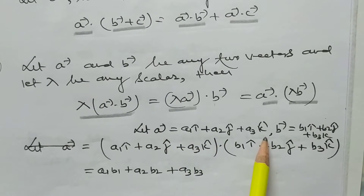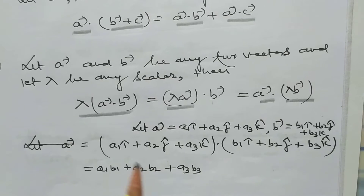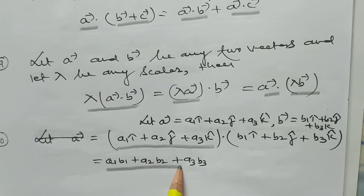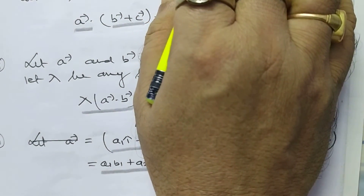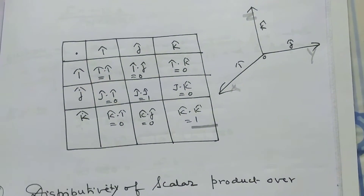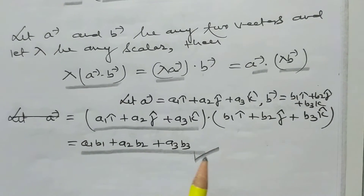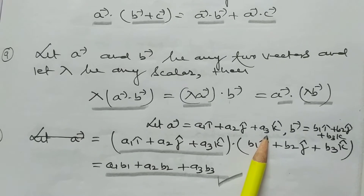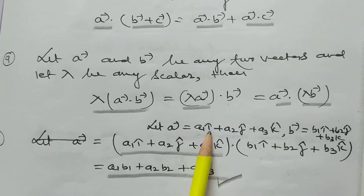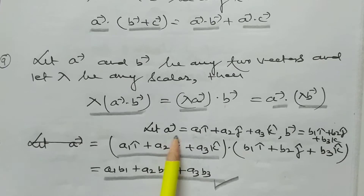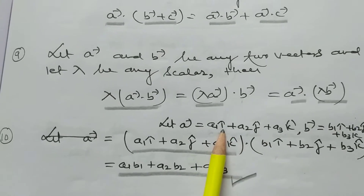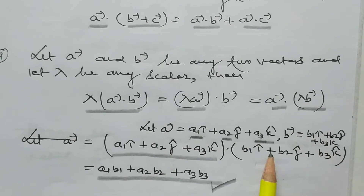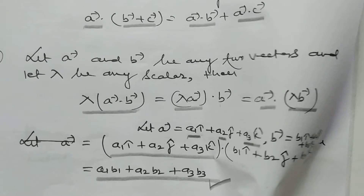Let vector A equal a1î + a2ĵ + a3k̂ and vector B equal b1î + b2ĵ + b3k̂. If we take the dot product of vector A with vector B, we get a1b1 + a2b2 + a3b3, using the properties of dot product. Here a1, a2, a3 are the components of vector A along the X, Y, and Z axes respectively.